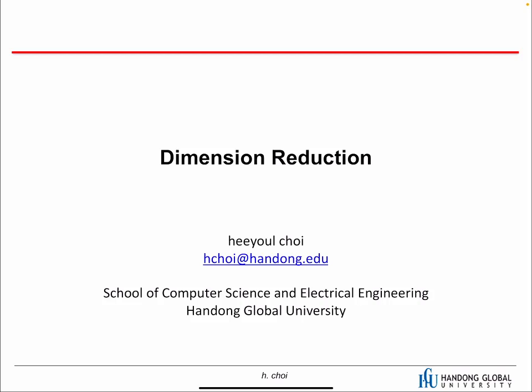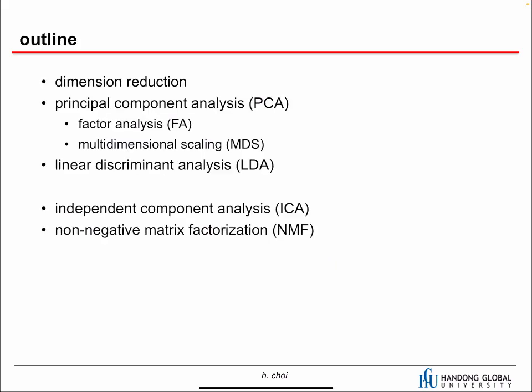In this chapter we're going to learn dimension reduction, which is one of the unsupervised learning tasks. Without labels, we can reduce the dimensionality of a dataset. We'll talk about why we need dimension reduction and what algorithms are available. In this chapter we'll cover linear algorithms: PCA, FA, MDS, LDA, ICA, and MF. Nonlinear dimension reduction algorithms will be covered in the next chapter.